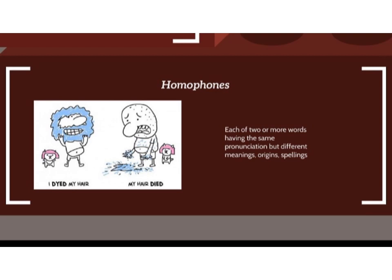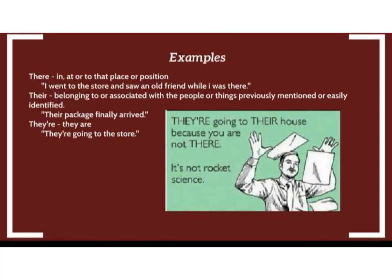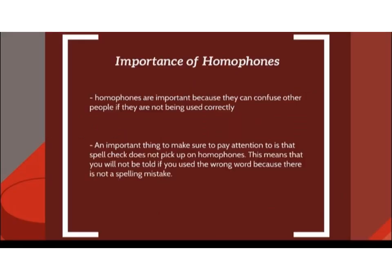A homophone is a word that is pronounced the same as another word but differs in meaning and is spelled differently. Examples for homophones: 'They are going to their house because you are not there.' Here the words they're, their, and there are similar in pronunciation but differ in meaning and also differ in spelling. These are a few examples for homophones.